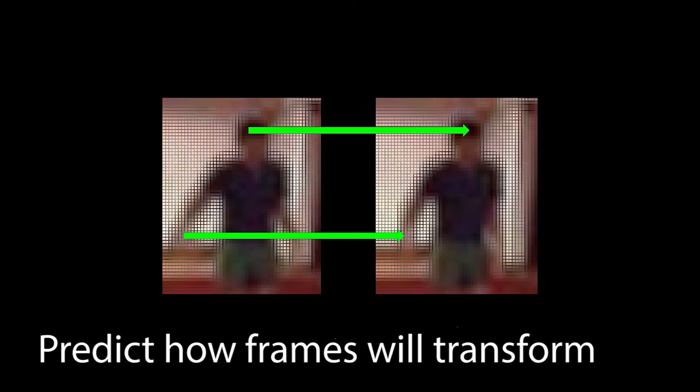The central idea of our model relates to how images are generated. Instead of predicting pixel values from scratch, the model predicts how the previous frame will transform into the next frame.